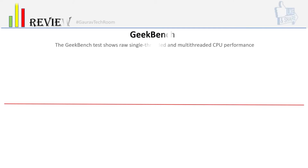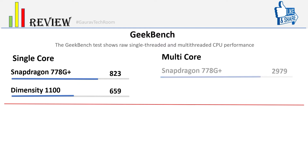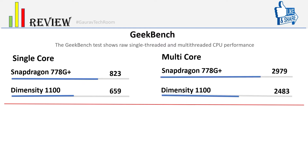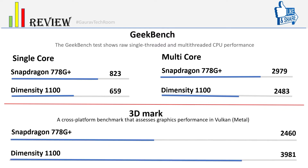Now for Geekbench 2, looking at single core and multi core: single core Snapdragon score is 823 and Dimensity score is 659. Multi-core Snapdragon score is 2979 and Dimensity score is 2483. For 3D Mark, Snapdragon score is 2460 and Dimensity score is 3981.